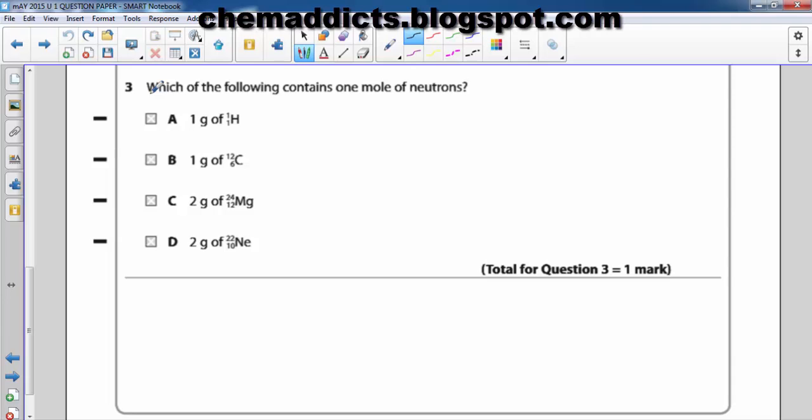In question number three, it says which of the following contains one mole of neutrons. So this is the keyword of this question: one mole of neutrons. So is it one gram of hydrogen, one gram of carbon, two grams of magnesium, or two grams of neon? Well, let's see.